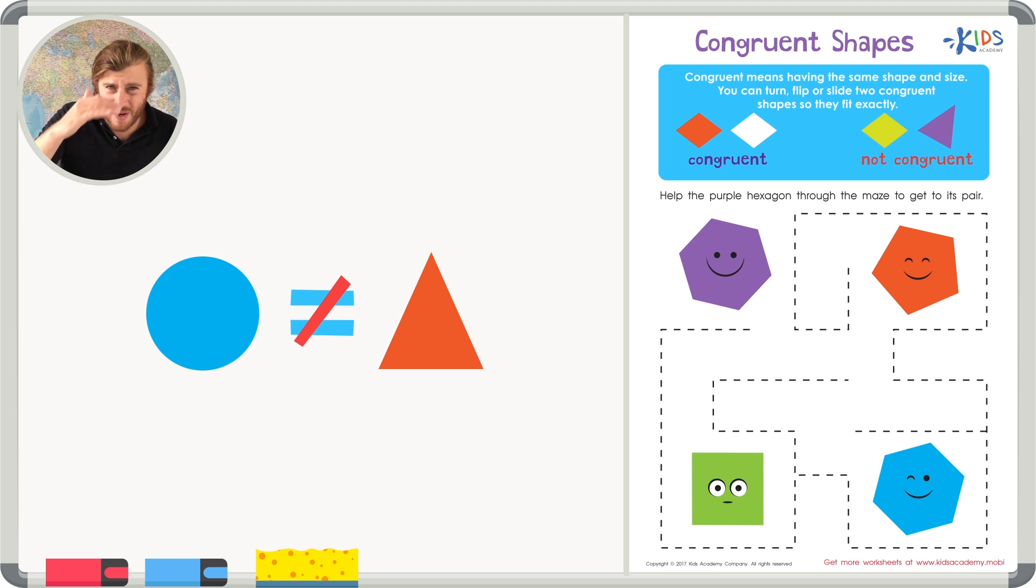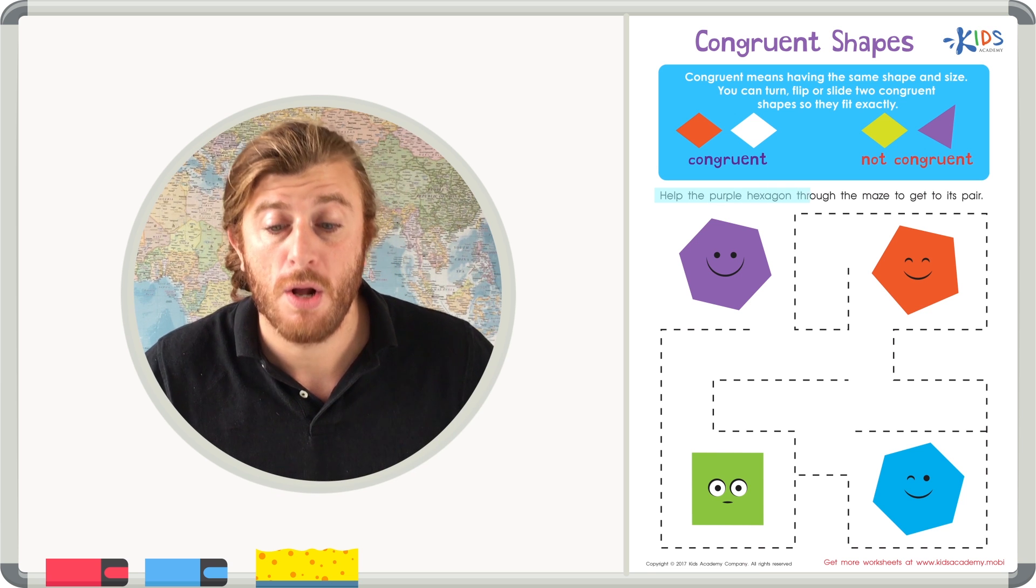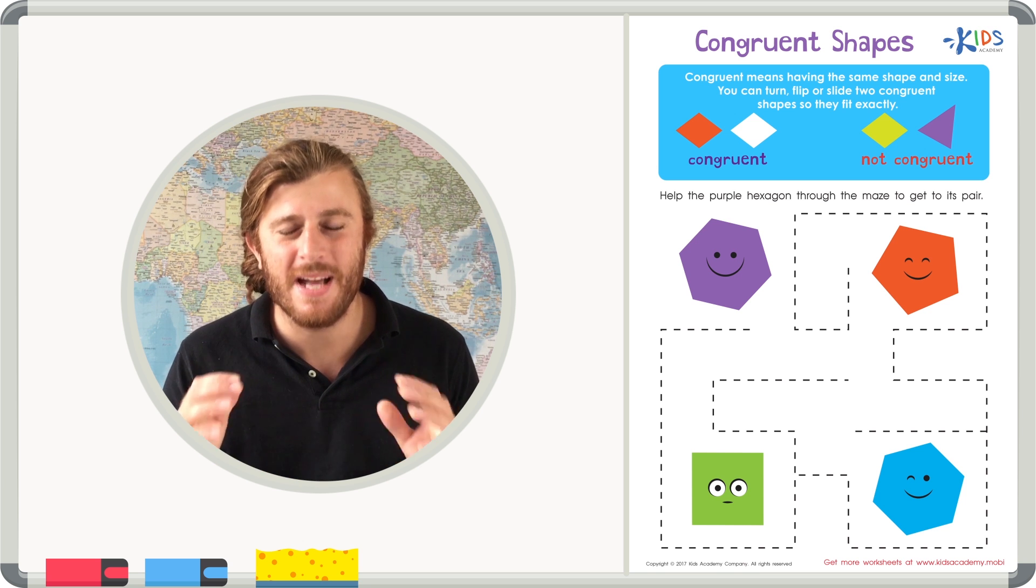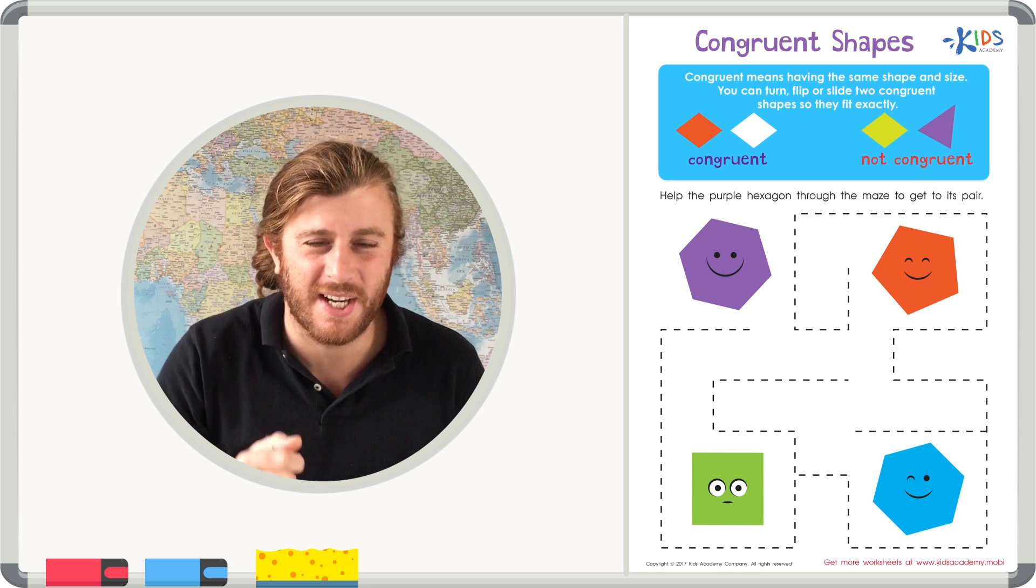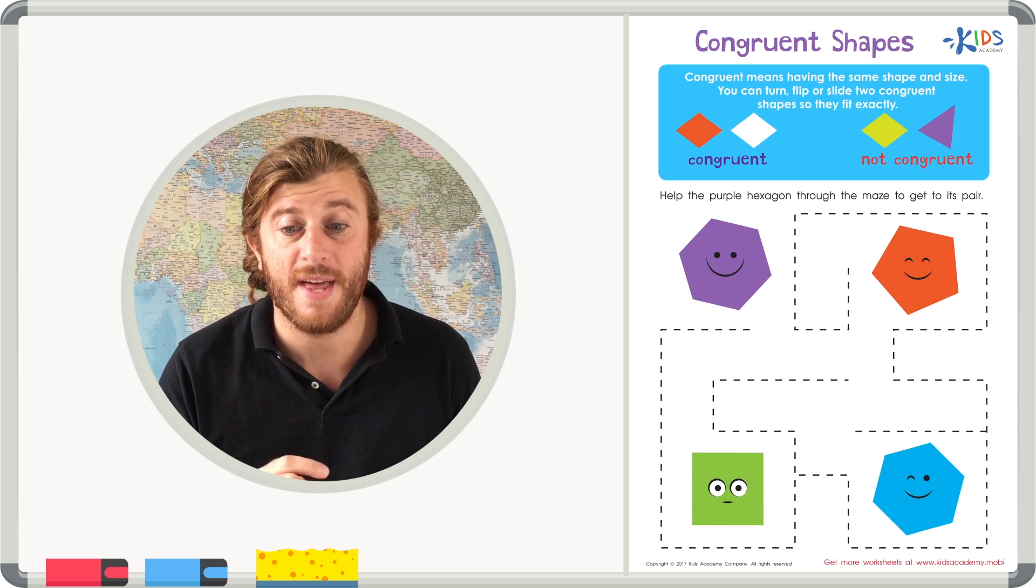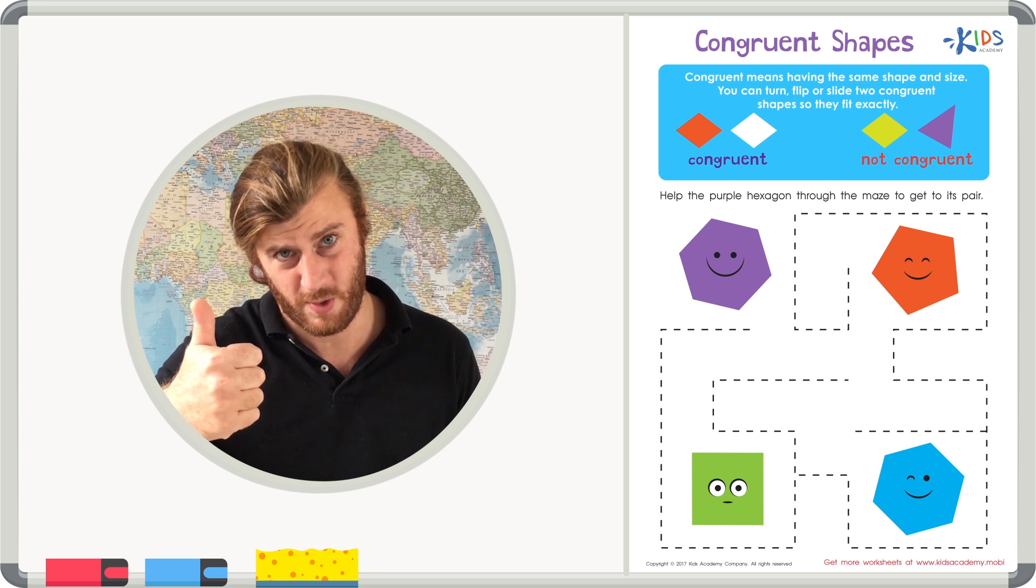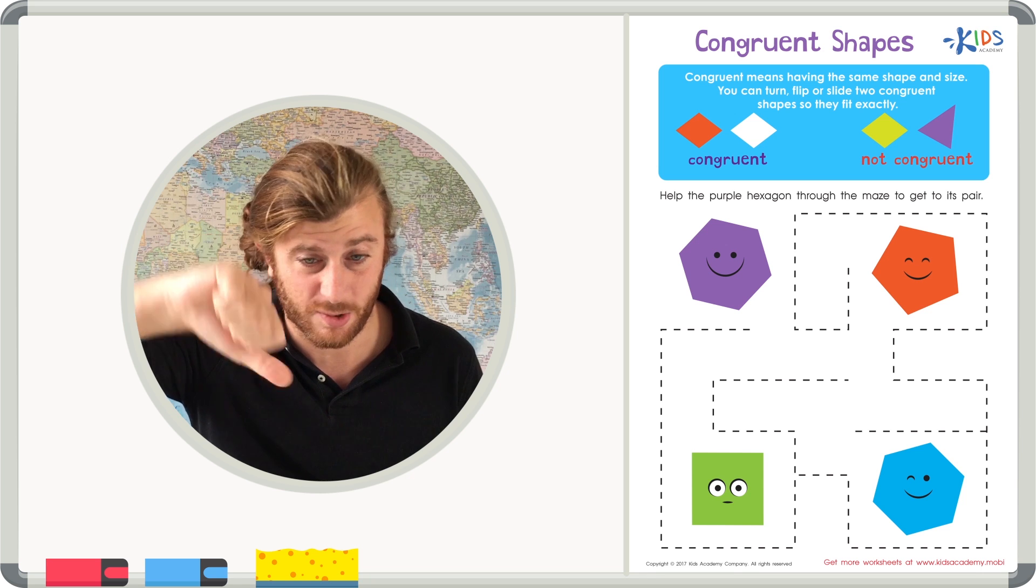Other times, you have to look really carefully. Sometimes you might have to count the sides. Sometimes you might have to say the name of the shape. Let's take a look at these examples. And we're going to try a few strategies to see which shapes are congruent or equal. Help the purple hexagon through the maze to get to its pair. I think the best thing to do would be to study the purple hexagon really closely so that when we look at other shapes, we know right away whether they're equal or congruent or not equal and not congruent.